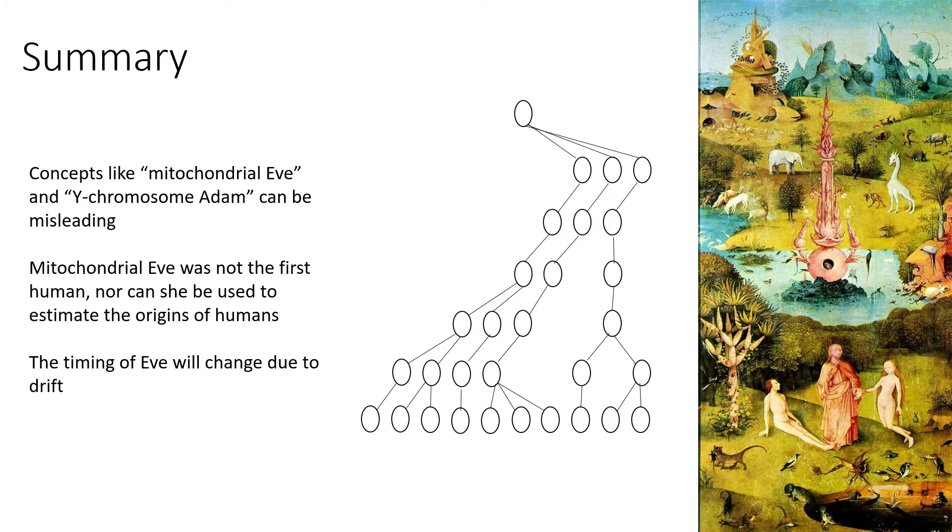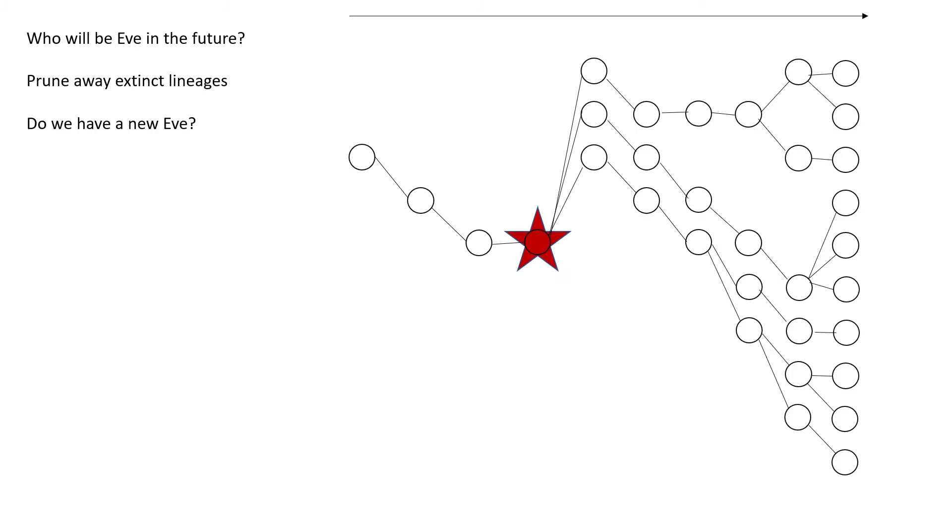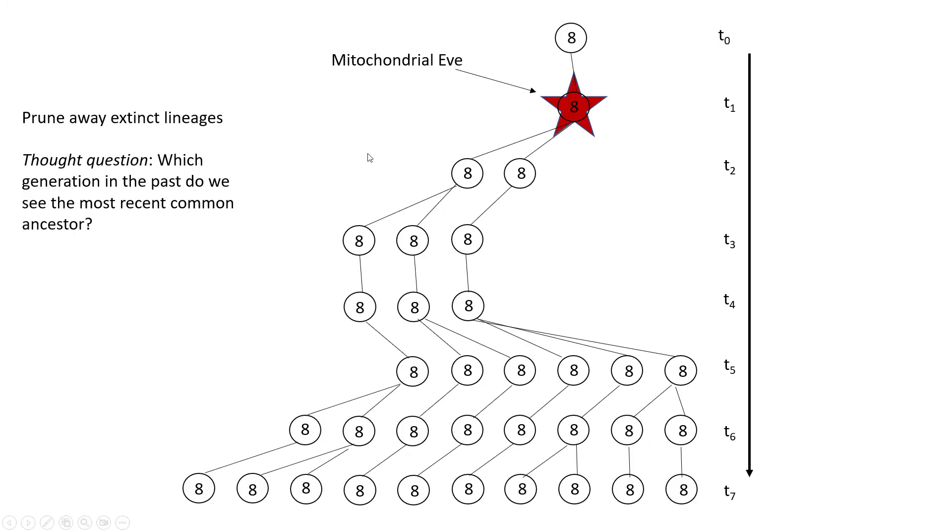Mitochondrial Eve was not the first human, nor can she be used to estimate the origin of humans. Because again, this lineage predated this one. And we know that this lineage came from one that even predated it.